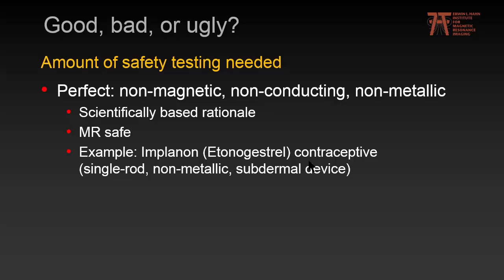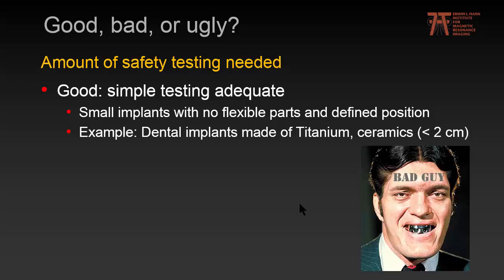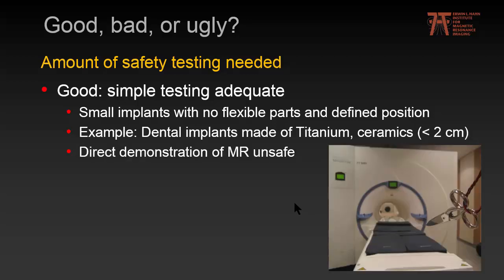An example of a perfect implant is the implant contraceptive, which is a single rod, non-metallic, sub-dermal device. Good implants require only simple testing — typically small implants with no flexible parts at a very defined position, such as dental implants. Note that if there is too much dental work, this can also turn bad. Also, if you can directly demonstrate that an item is MR-unsafe, you are done with your safety assessment immediately — just one demonstration of MR-unsafe is enough, whereas just one example of MR-conditional may not be.